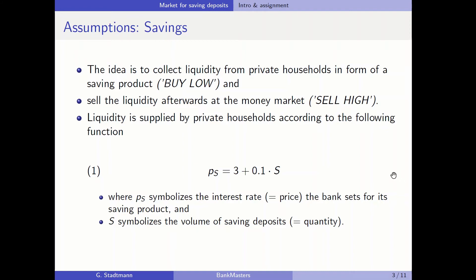Liquidity is supplied by private households according to the following formula: the interest rate in the saving market is equal to 3 plus 0.1 times S, where PS symbolizes the interest rate — the price set by the bank for the saving product — and S symbolizes the volume of saving deposits, the quantity. For example, if you want to buy one unit of saving deposits you have to set an interest rate equal to 3.1 percent.